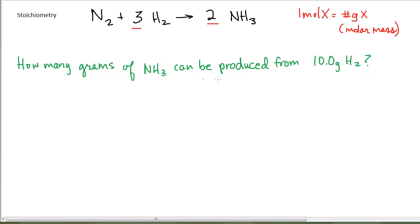Similar to the last video, notice that nitrogen is not mentioned. Since we don't mention nitrogen, the assumption is that we have plenty of it, and we are only concerned with, if we're limited to 10 grams of hydrogen, how much ammonia could we produce.